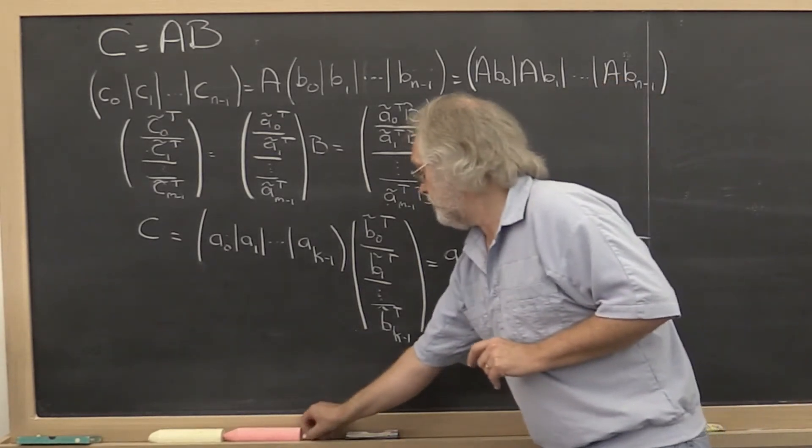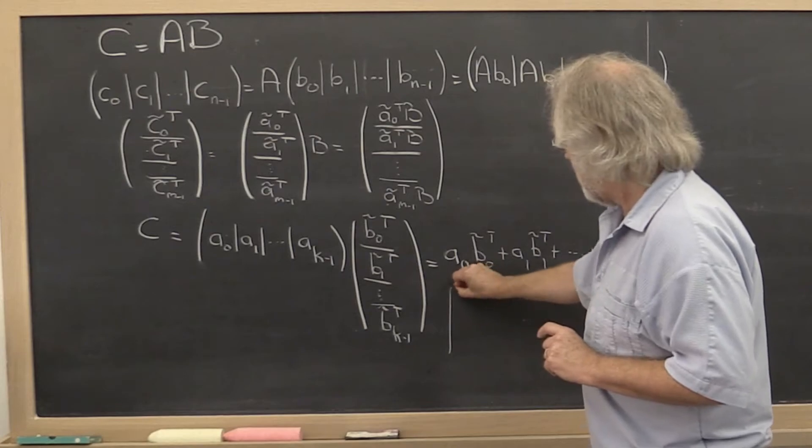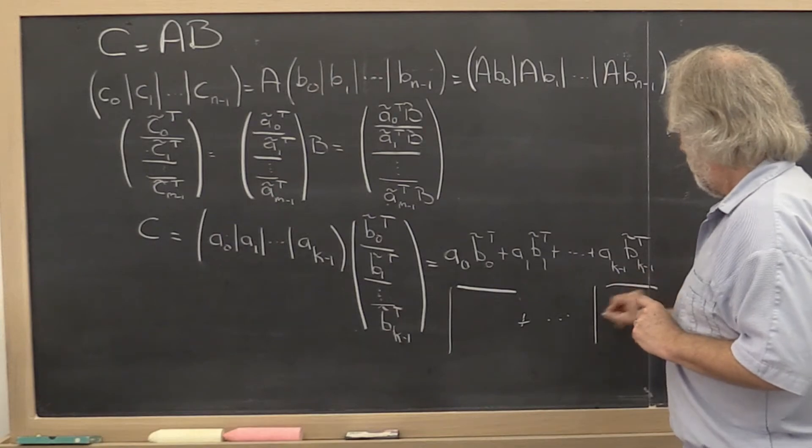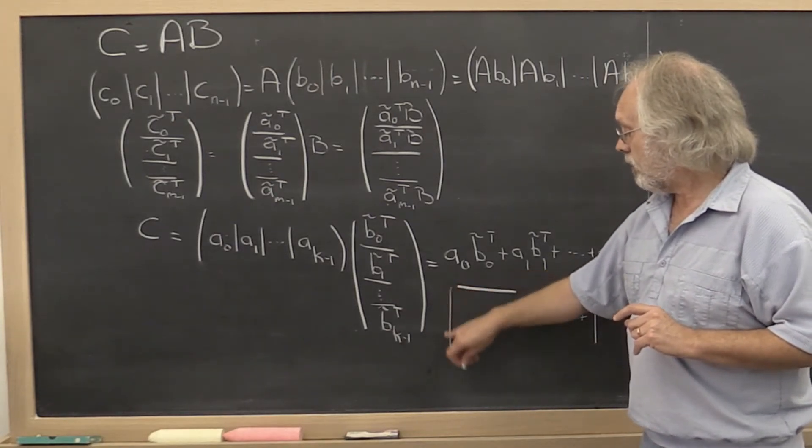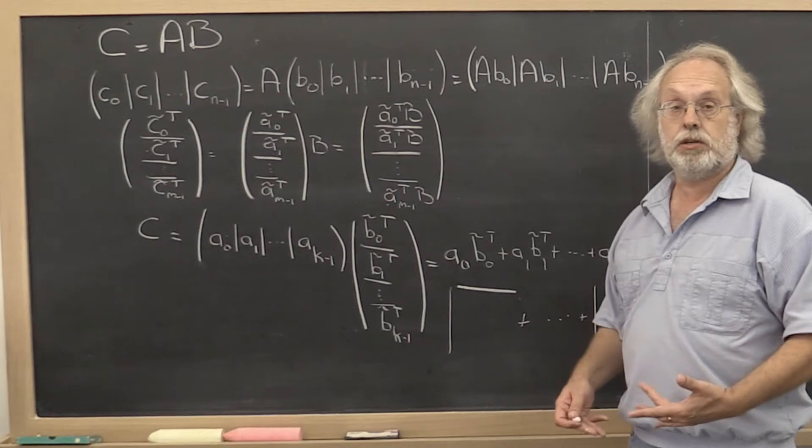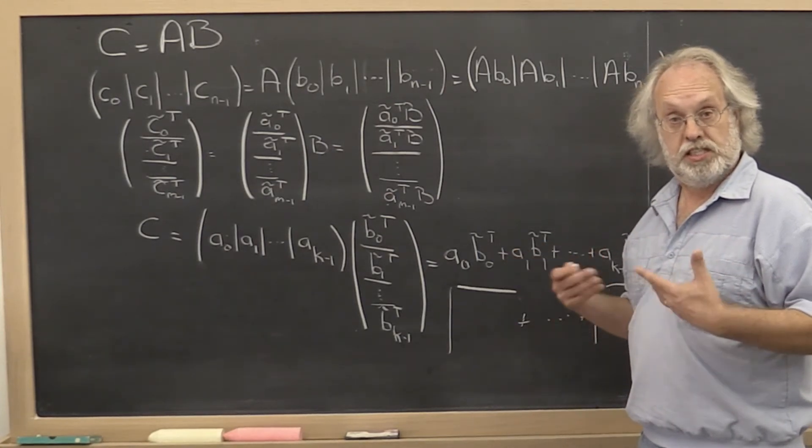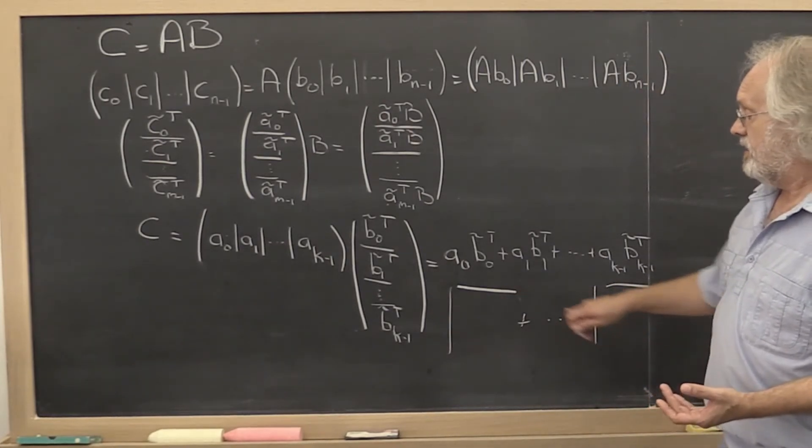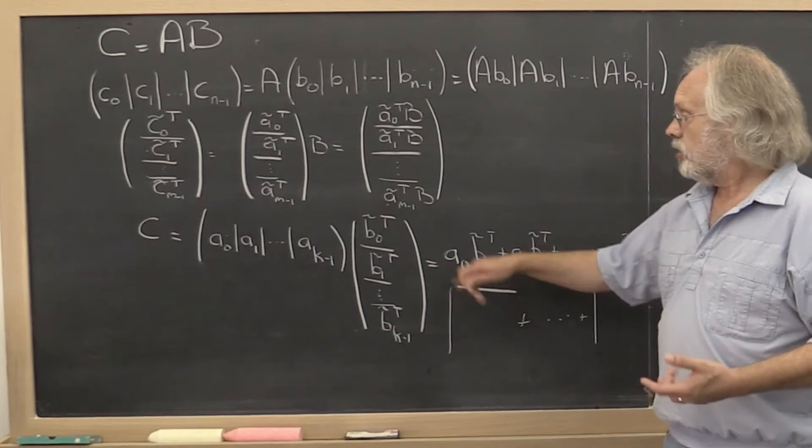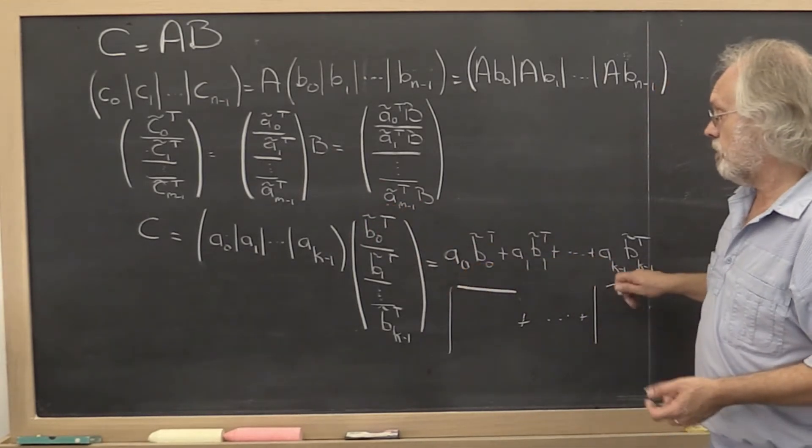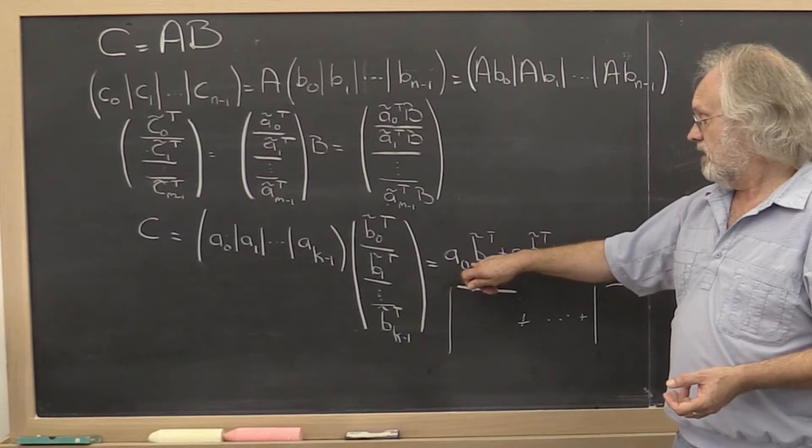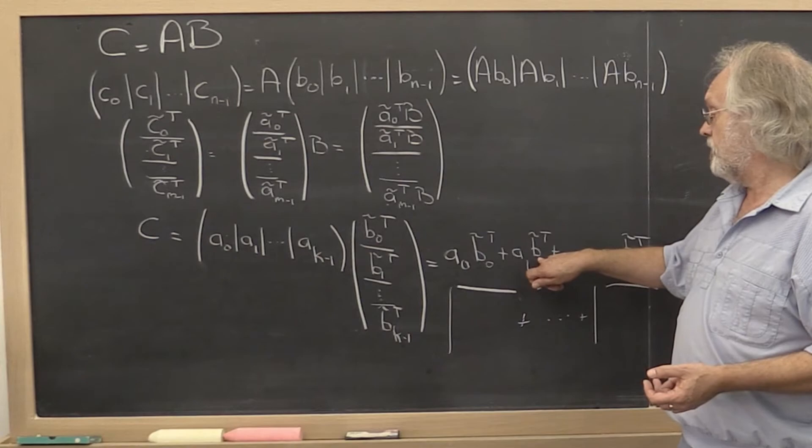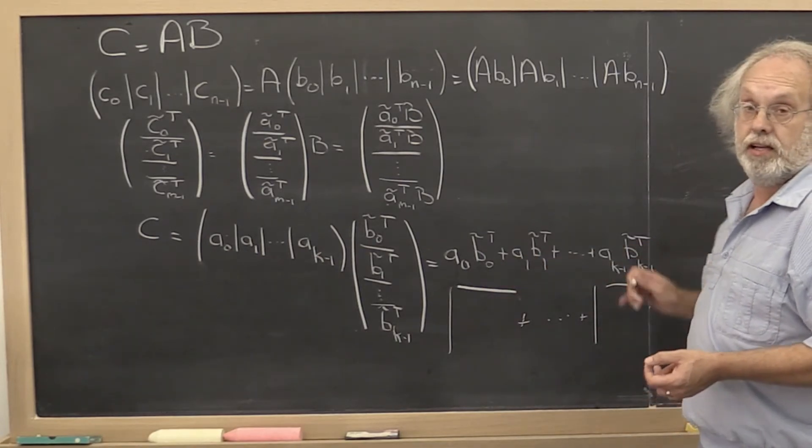Now notice that each of these terms is a column times a row and so forth. And you learned that multiplying a column times a row is actually a rank 1 matrix. It's actually an outer product is what it's called. And looking at it this way is often referred to as computing matrix C as a sequence of rank 1 updates. Because this is a rank 1 update to matrix 0. And then you add a rank 1 update to what you already computed and so forth.